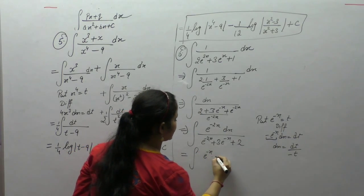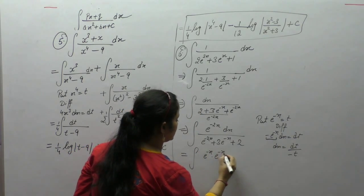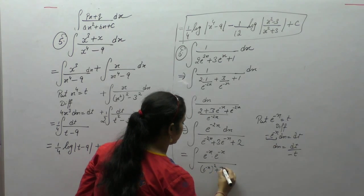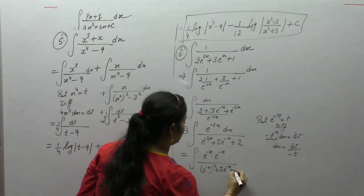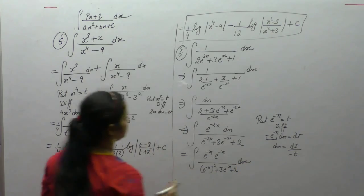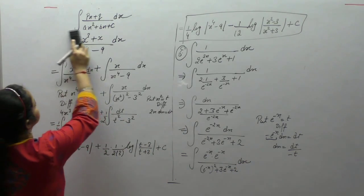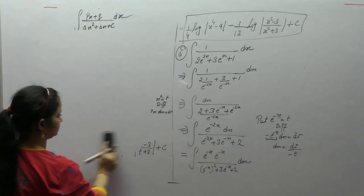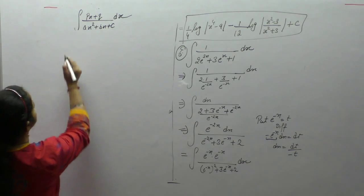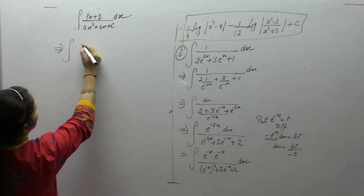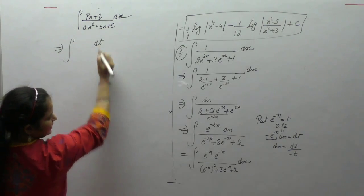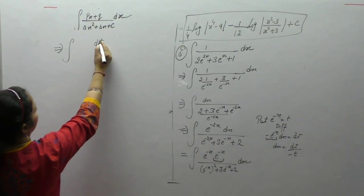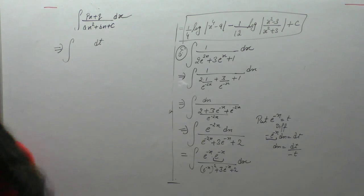We write here E^(-x) and E^(-2x) in terms of t. So E^(-2x) whole square, 3 into E^(-x) plus 2. We replace E^(-x) dx as dt, and 1 upon E^(-x) as t, giving minus dt upon t, substituting into the integral.